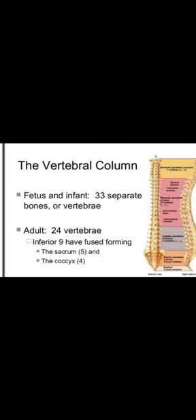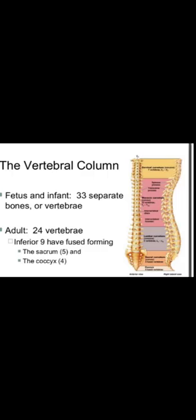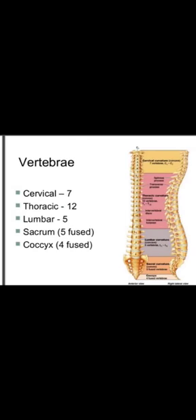The inferior nine vertebrae have fused to form the sacrum and the coccyx — five form the sacrum and four form the coccyx.